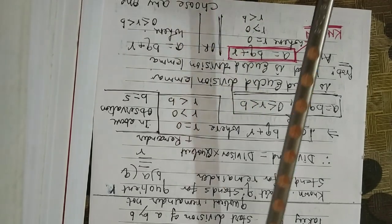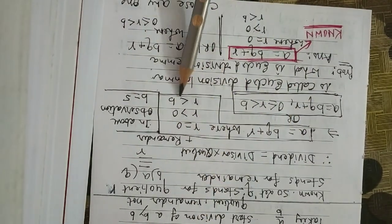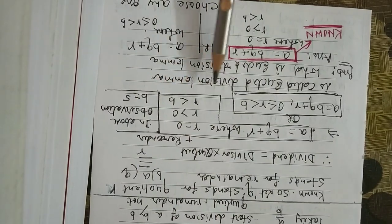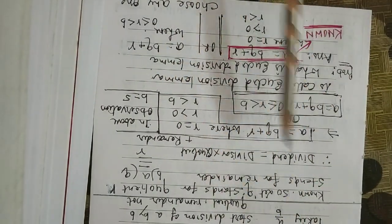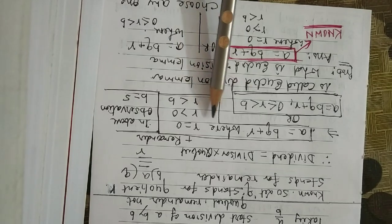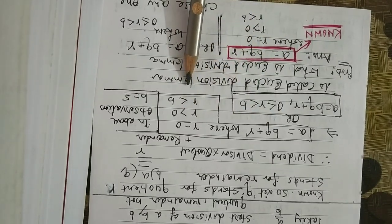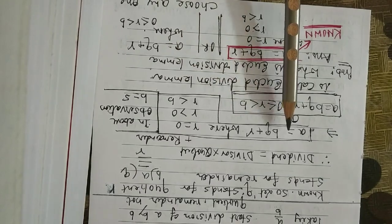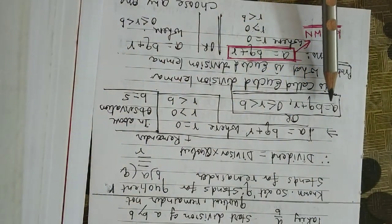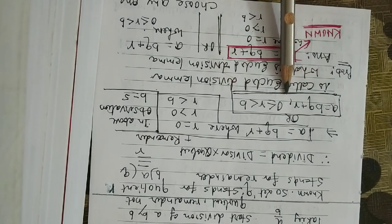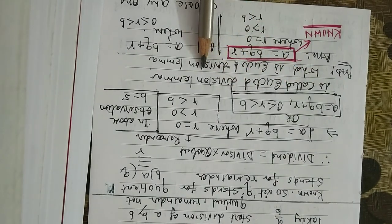Where R is equal to 0, or R is more than 0 — that is, 1, 2, 3, 4 are all more than 0 — and R is less than B, just as the remainder is less than 5 when divisor is 5. So R is less than B. In shortcut you can combine all three conditions: A is equal to BQ plus R. This is called Euclid's Division Lemma.